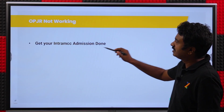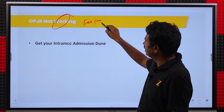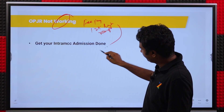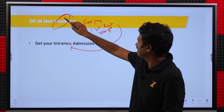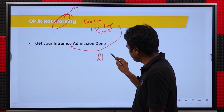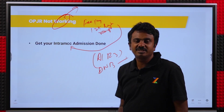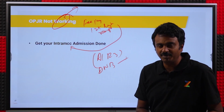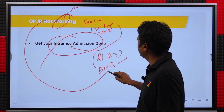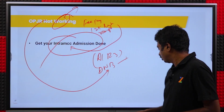If OPJR is not working but you have already made a fee payment to DNB of 1.25 lakhs and have that receipt, that is enough — everything else is in IntraMCC only, and OPJR can be managed later. If you have not done this before and are getting a DNB seat for the first time and OPJR is not working at all, go to the institute and check with them. Institutes are flexible because they know there is an issue. Get your IntraMCC admission done; the OPJR fee payment can be taken care of later. Almost all candidates in this situation have been able to manage this.